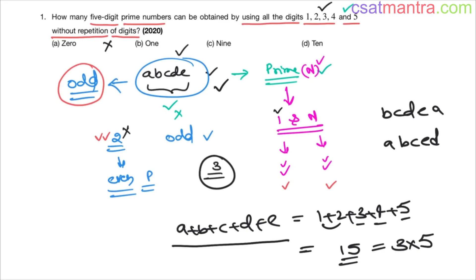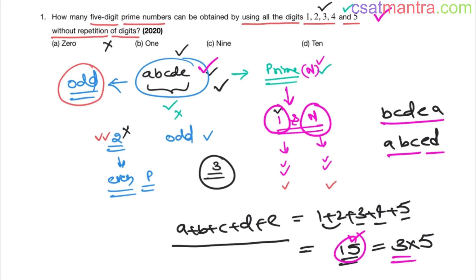No matter what arrangement you form using these five digits — whether A B C D E or B C D E A — the sum of the digits is always 15, which is divisible by 3. That means this number is always divisible by 3. When a number is divisible by 3, it cannot be prime. So we cannot form any prime number using all these digits. Our answer is zero.